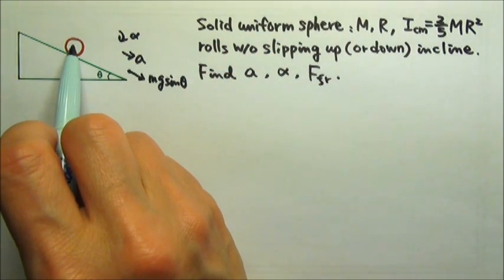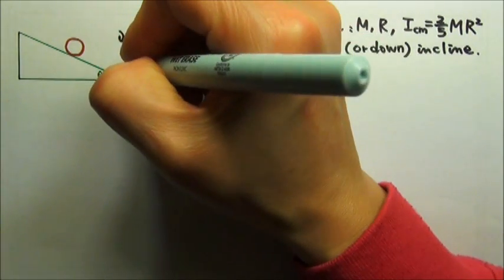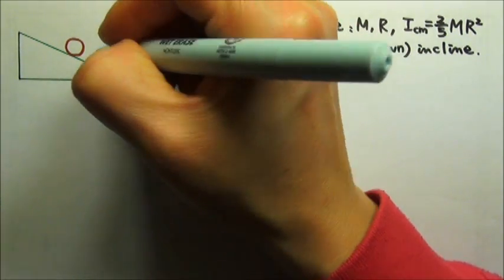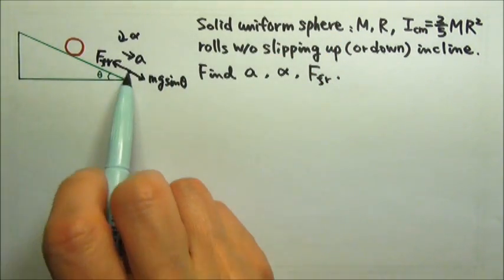Since the sphere has a tendency to slide down the incline, the static friction goes up the incline. And that will be it for the forces along the incline.